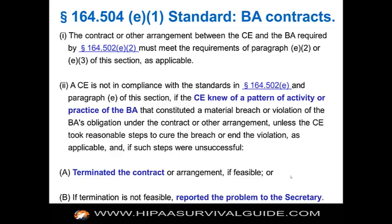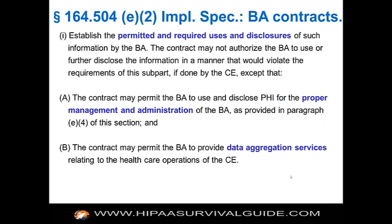You have to take certain specific action if you find that the other party is in material breach. Under 164.504(e)(2), implementation specifications BA contracts establish the permitted and required uses and disclosures. The uses and disclosures permitted or required of the business associate depend on the business function the BA is performing on behalf of the covered entity. The contract may permit the BA to use and disclose PHI for the proper management and administration; a BA or subcontractor wouldn't be able to perform that business function if it couldn't use the PHI for its own management.